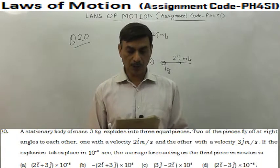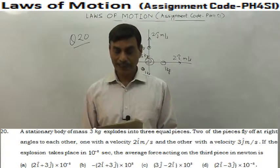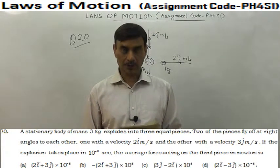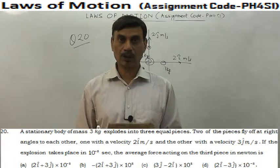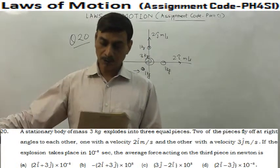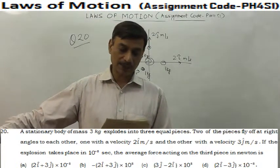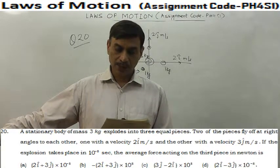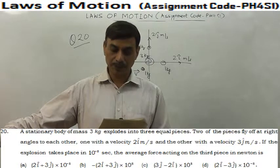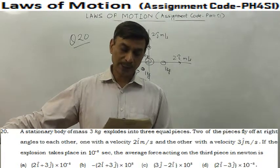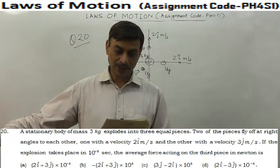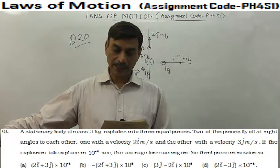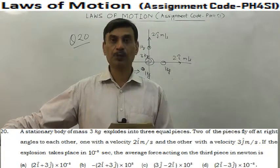Question 20: A stationary body of mass 3 kg explodes into three equal pieces - so 1 kg each. Two of the pieces fly off at right angles to each other, one with the velocity of 2i meter per second, the other with the velocity of 3j meter per second. If the explosion takes place in 10 to the power minus 5 seconds, the average force acting on third piece in Newton is?